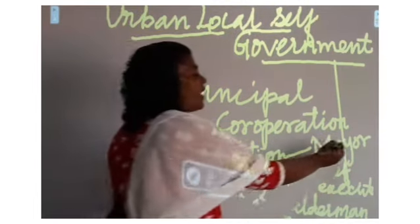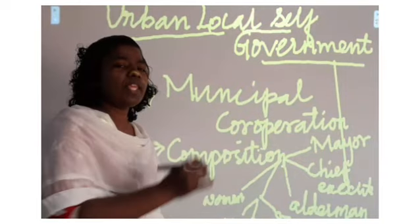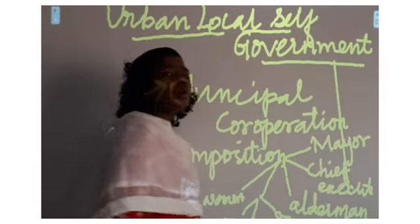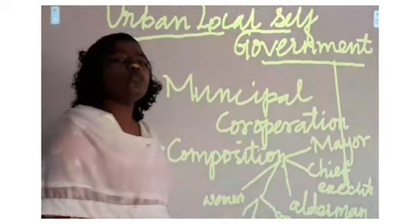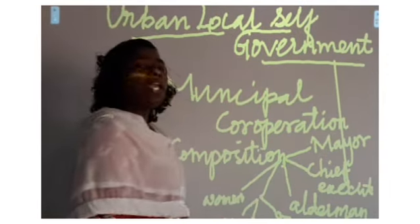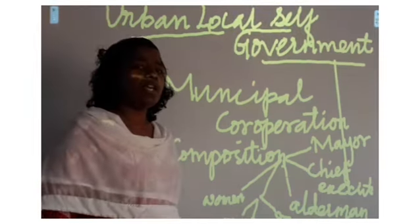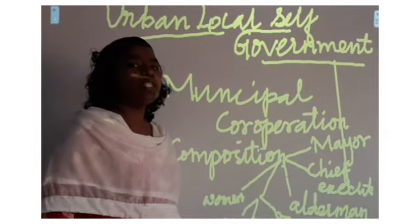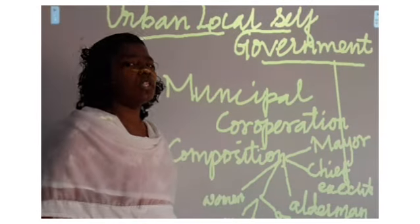Now we will see how the mayor and deputy mayor are selected. From among the elected members of the municipal corporation, the mayor and the deputy mayor are selected from among themselves. The term period of the mayor is 1 to 5 years. The duty of the mayor is to preside over the meeting. If any emergency arises or steps need to be taken, the mayor acts as chairperson, discussing matters with the other members of the municipal corporation.